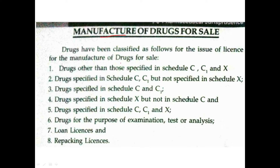Which of the drugs are specified in Schedule C, C1, and X? If we manufacture all of these drugs, that requires a new license. These drugs are in the first category. The second category is Schedule C and C1 drugs Manufacturing License, but it can also be manufactured including Schedule X.